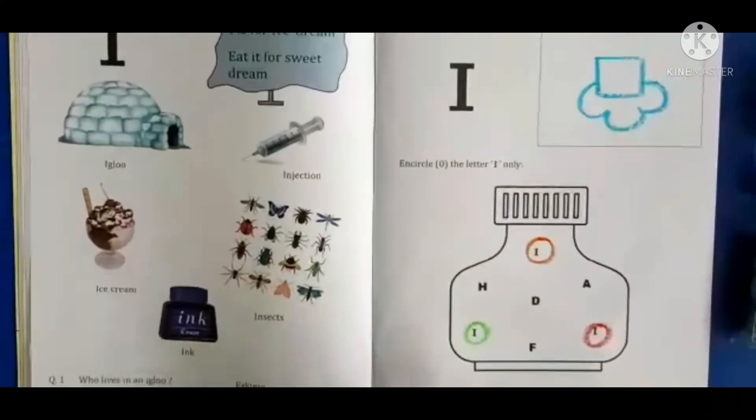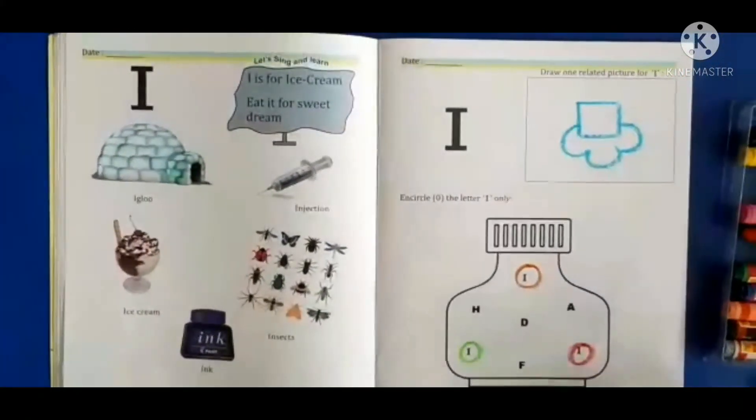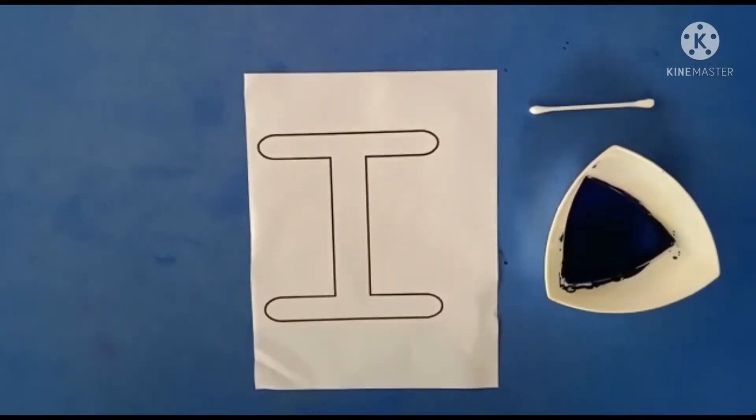Understood kids? So like this way you have to complete the exercise. Now children, it's activity time.